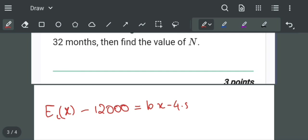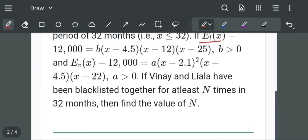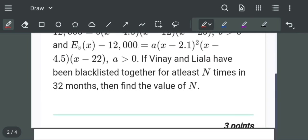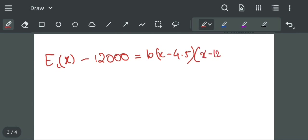EL(x) minus 12,000 equals b times (x minus 4.5)(x minus 12)(x minus 25). We have to find the values of x for which EL(x) is greater than 12,000.